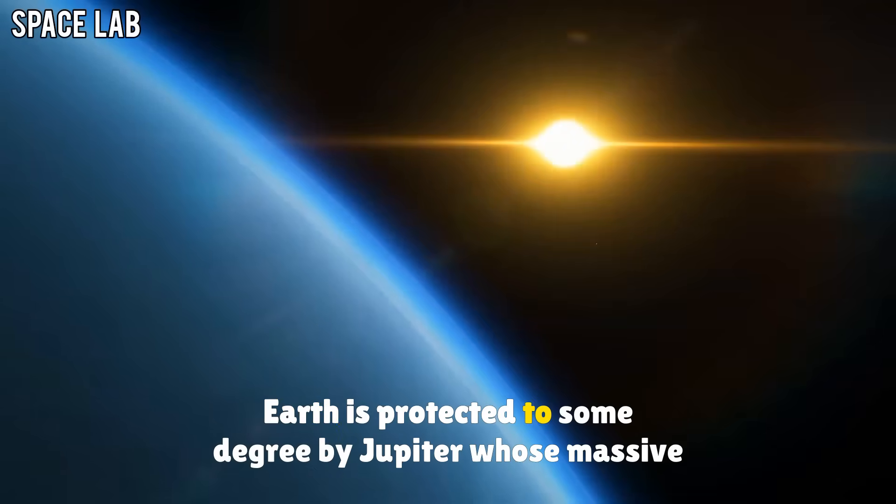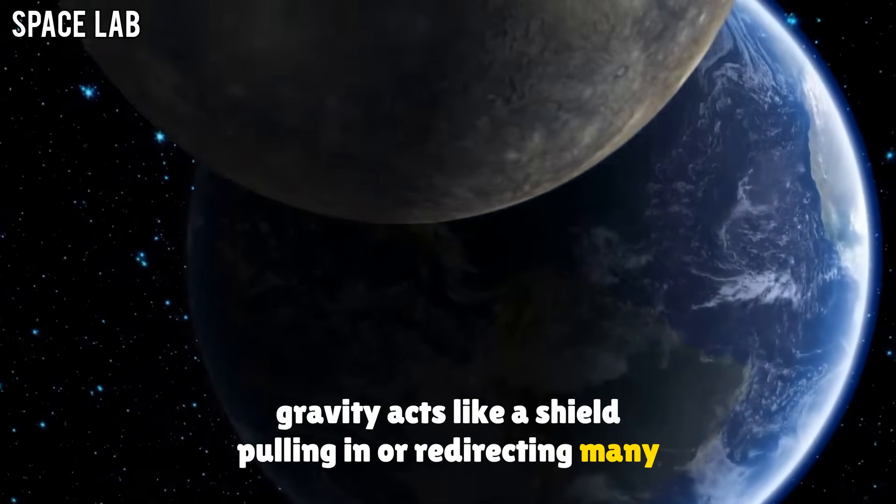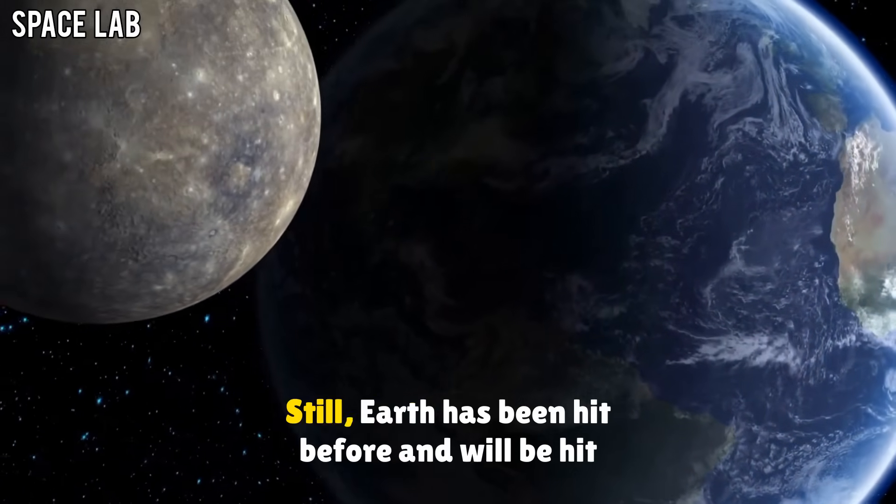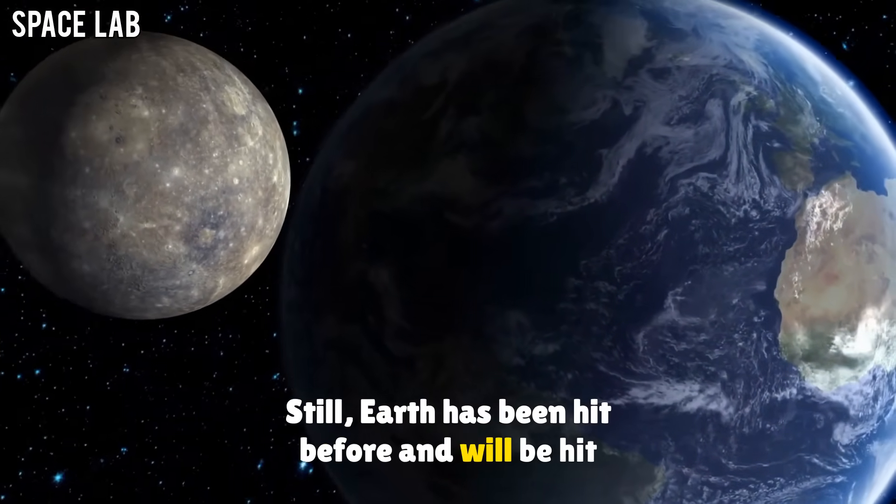Earth is protected, to some degree, by Jupiter, whose massive gravity acts like a shield, pulling in or redirecting many dangerous objects. Still, Earth has been hit before, and will be hit again.